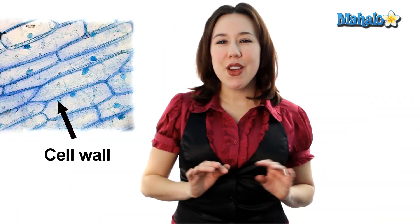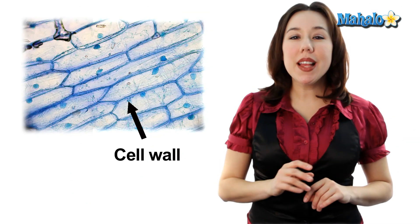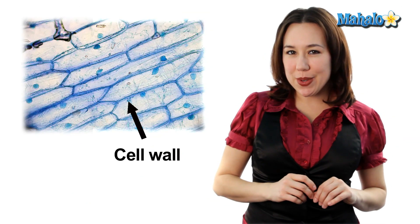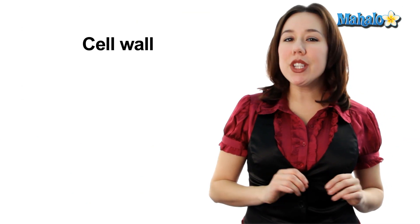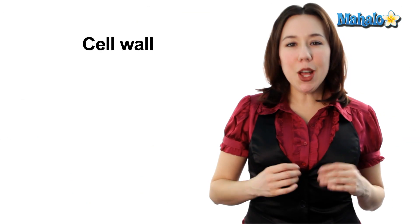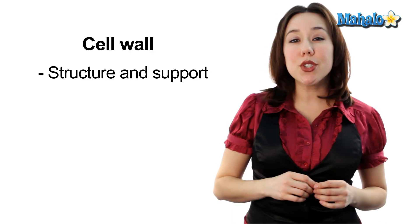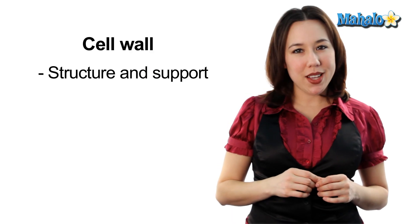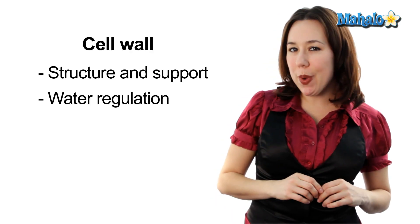Let's start with the organelles that plant cells have that you will not find in animal cells. First, plant cells have a rigid cell wall made from cellulose. This rigid cell wall helps to give the plant some structure and support and also helps with water regulation.